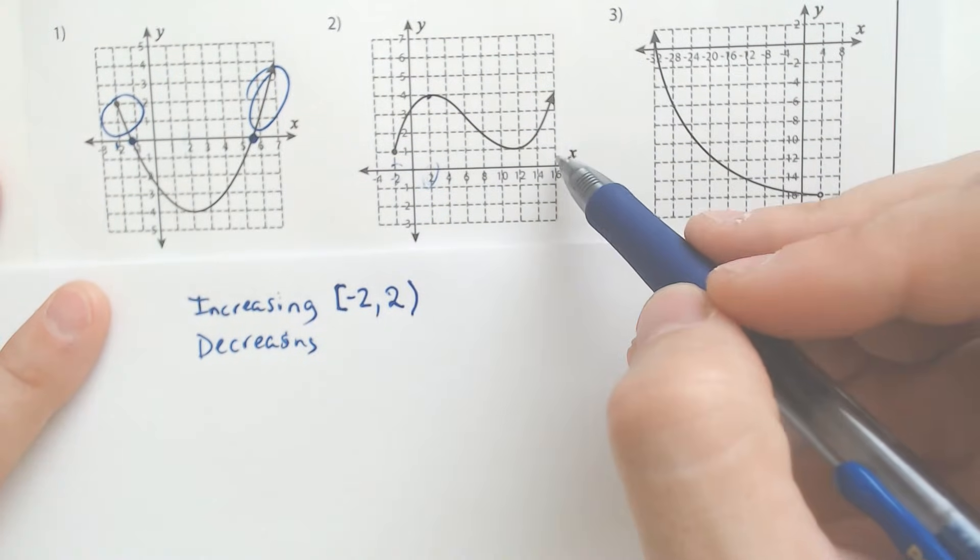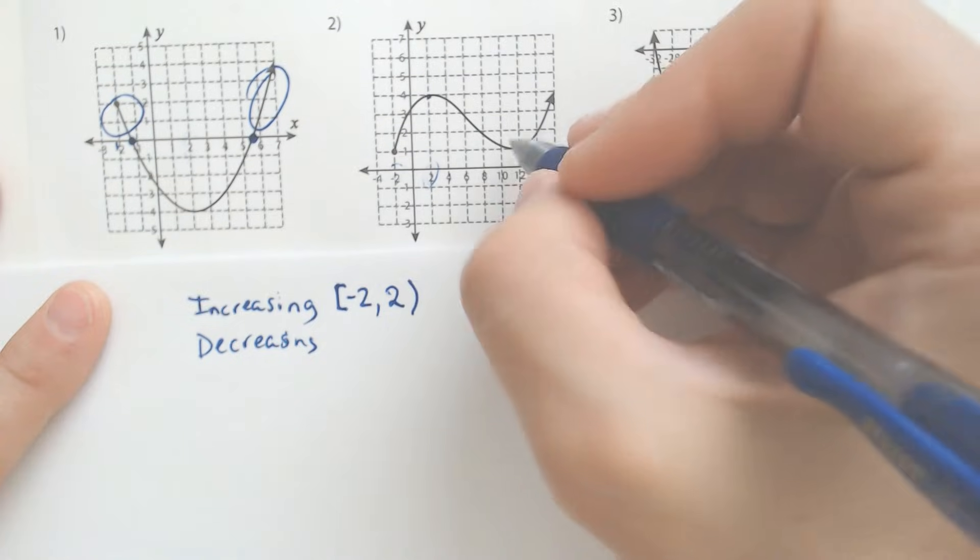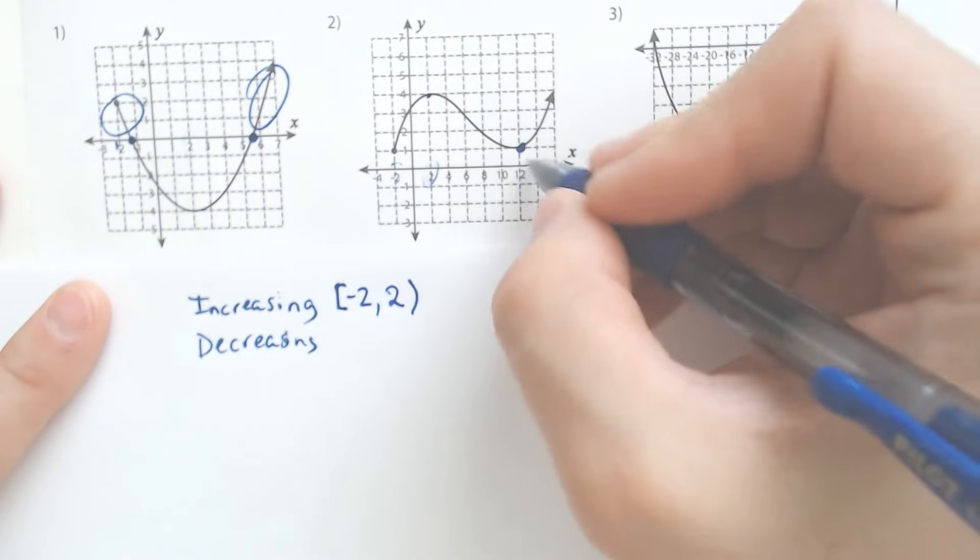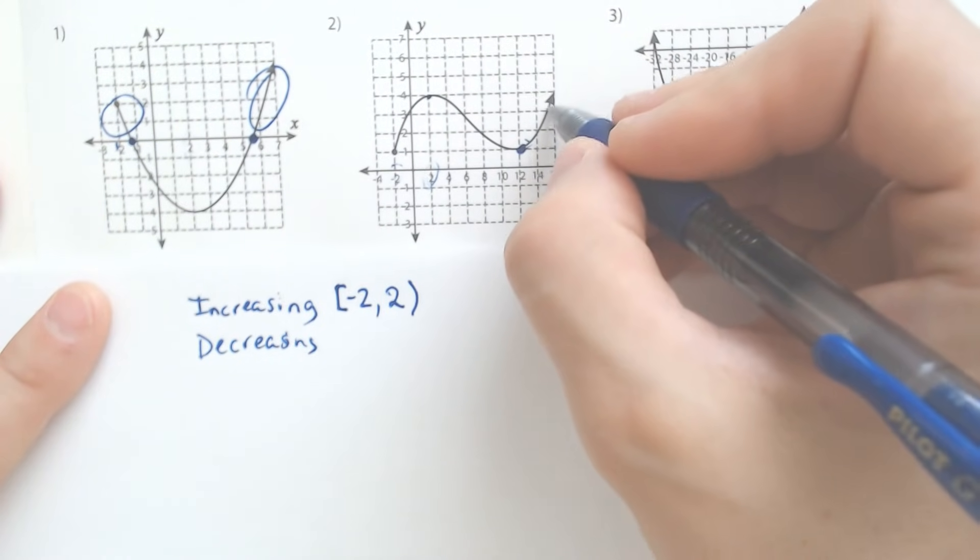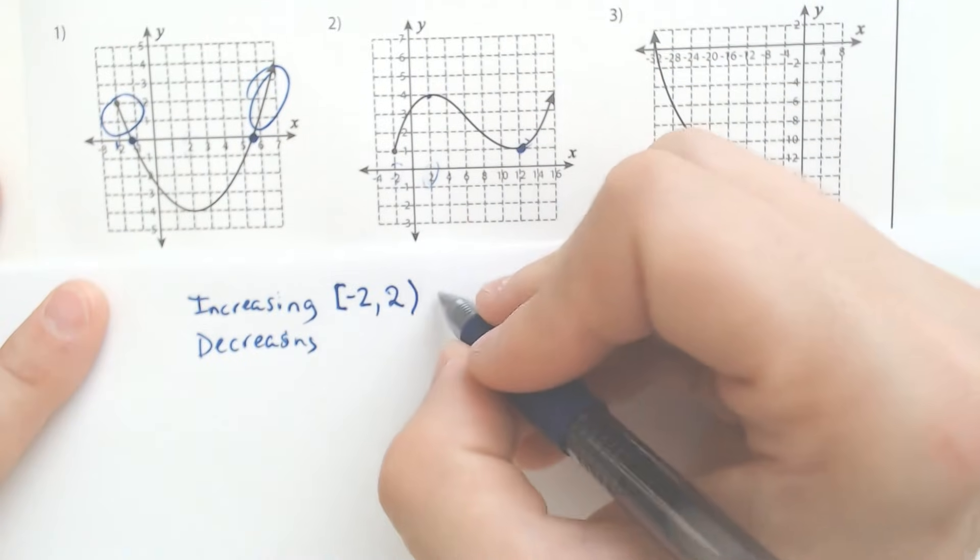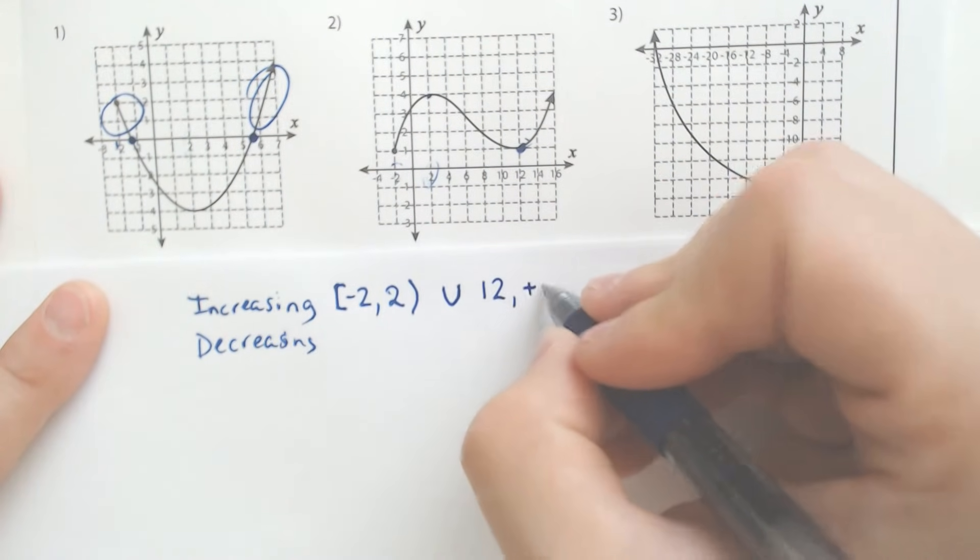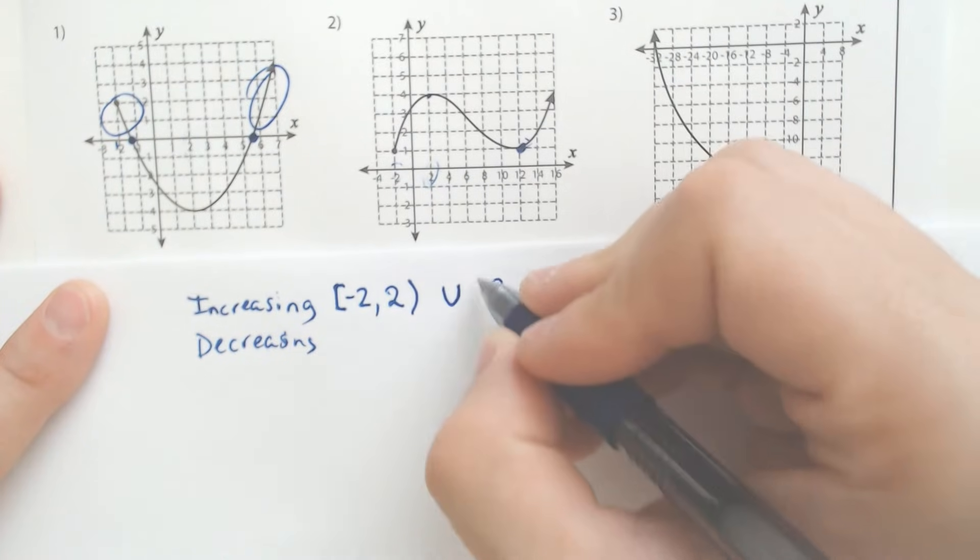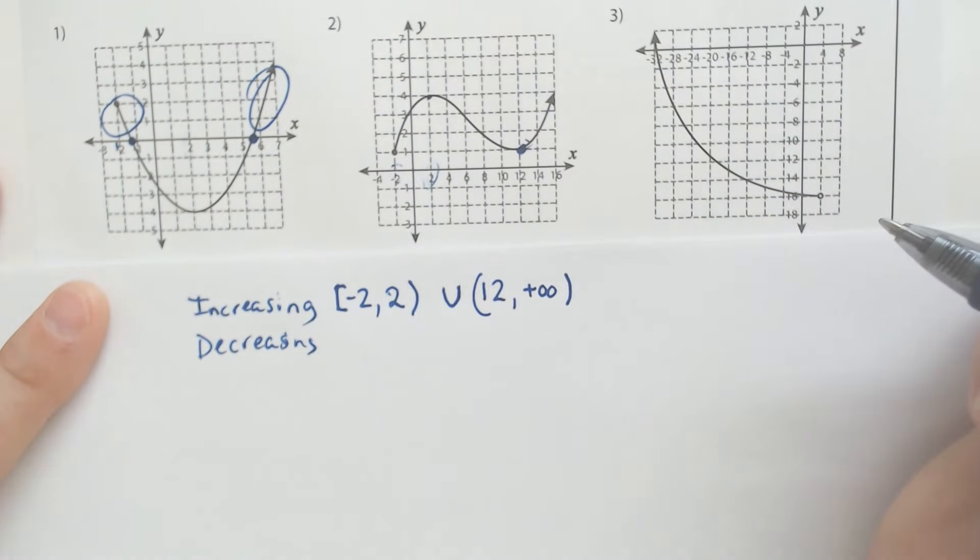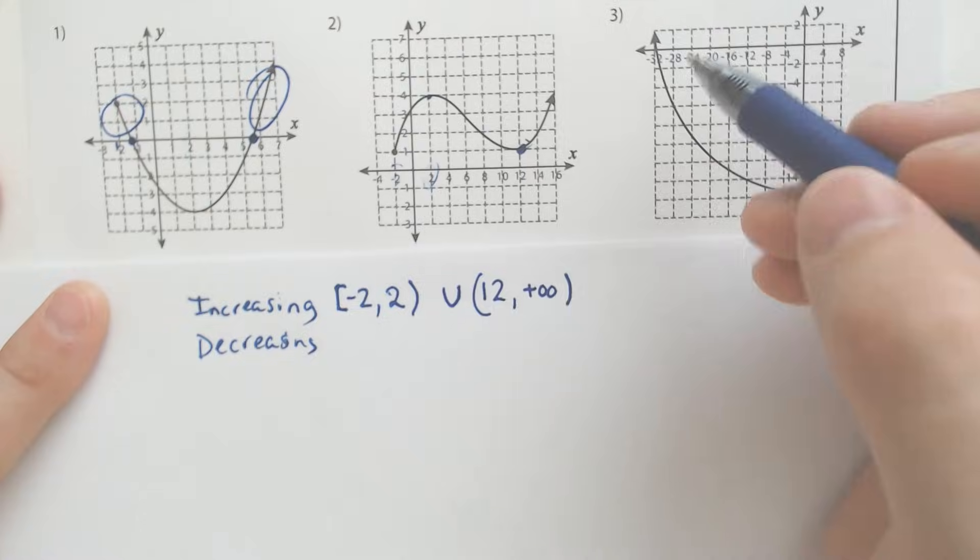Include the negative two and do not include the positive two because that moment we're like weightless. We're about to fly down the mountain, but we're also increasing again right here at 12 because we start going back up this roller coaster. So, and 12 to positive infinity because we're going up forever.